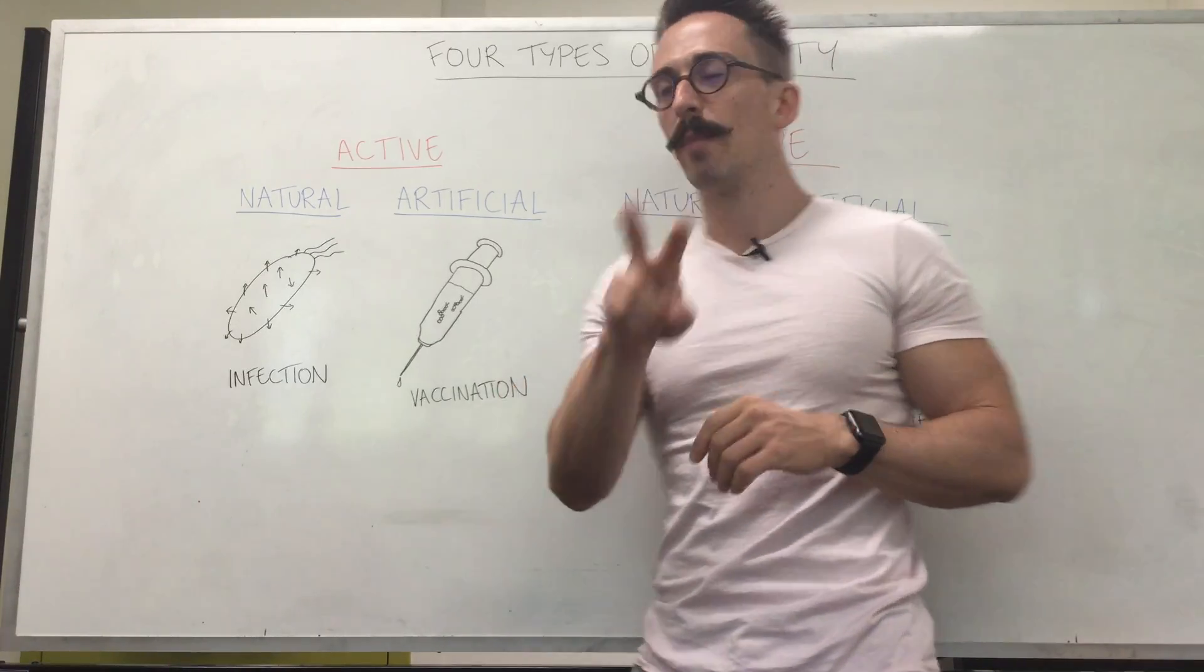So that means for the adaptive immune system, it can happen actively where you create the antibodies. Naturally means you are getting something from the environment that you are now creating an immune response to. Usually this is some sort of infection. Your body mounts an immune response creating antibodies with immunological memory against the specific infection. This is naturally acquired active immunity.